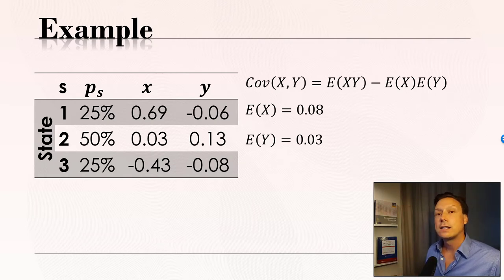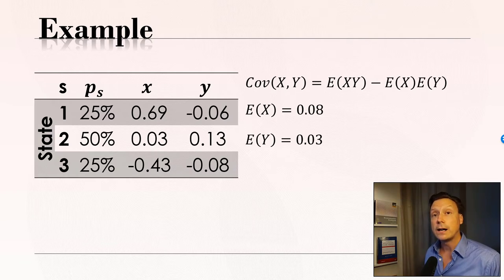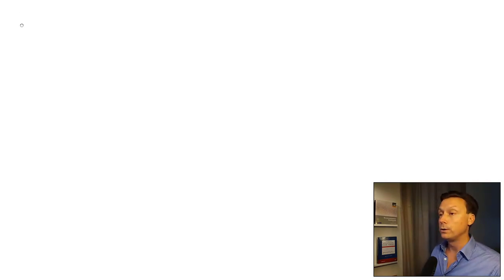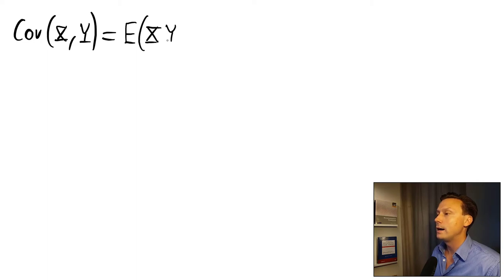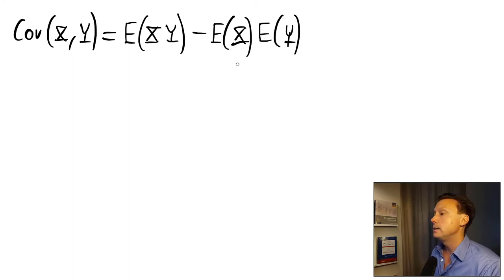Let's now calculate the covariance between these two random variables. What we want to find is the covariance between asset X and asset Y. We're going to use a simplified form. So we want to find the expected value of X times Y minus the expected value of X times the expected value of Y. And these two we already know: this was 0.08 and this was 0.03. So this is what we need to find.